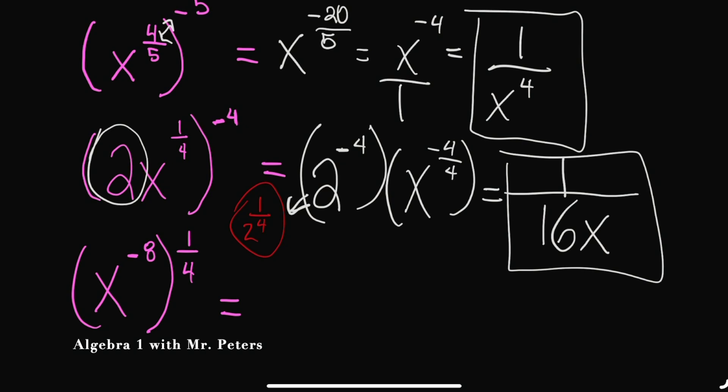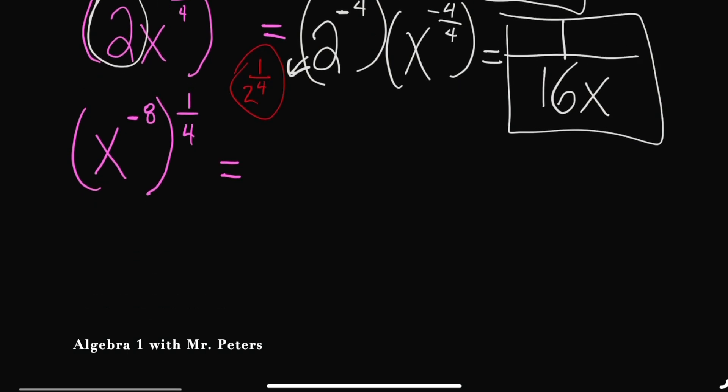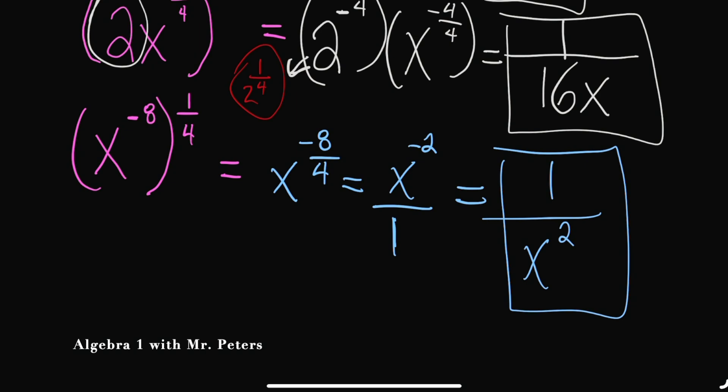Now, my very last example. Once we do this, we're going to have X to the negative eight over four power, which gives us X to the negative two. And now that we just simplify because we can't have a negative exponent, turn into a fraction, take its reciprocal. And our final answer is one over X squared.